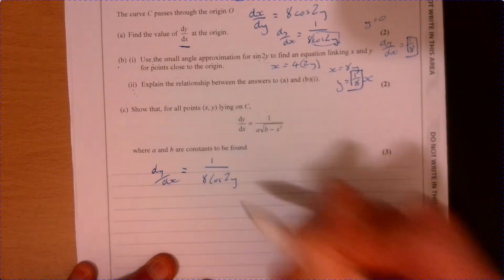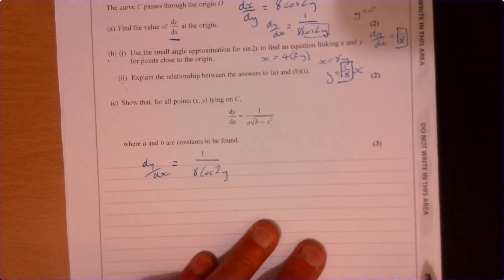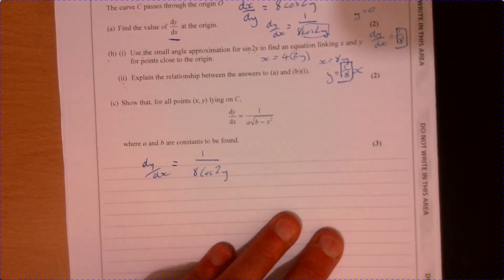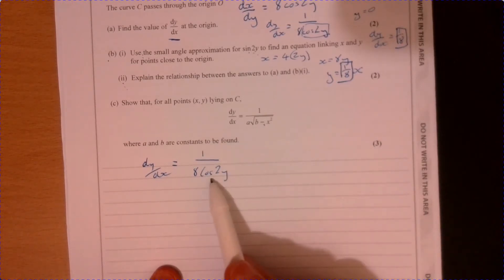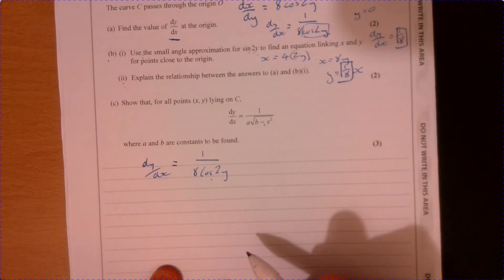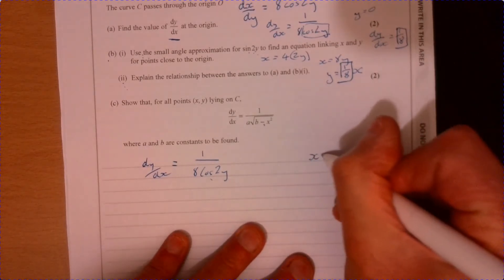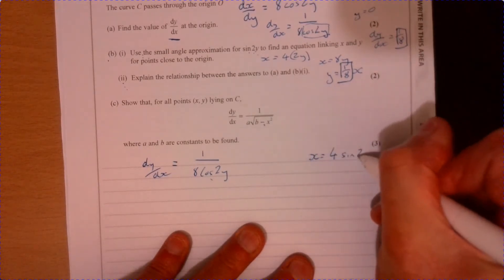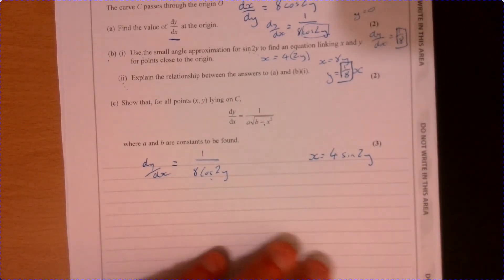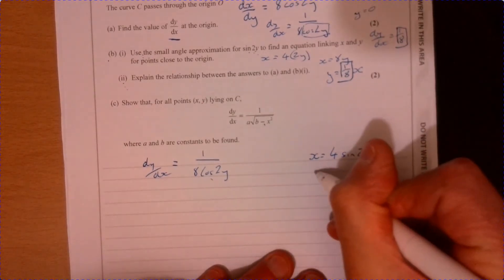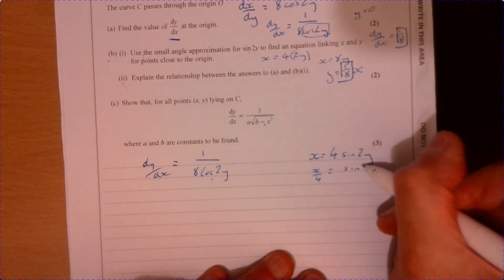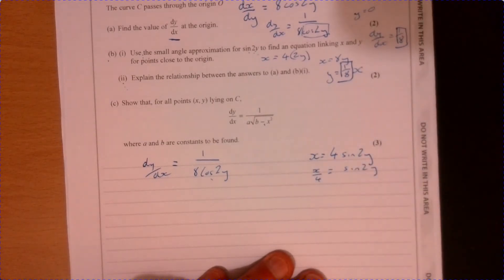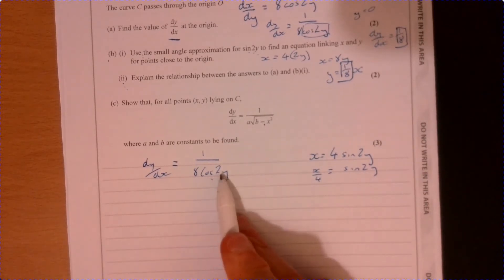It's not necessarily hard, but it's just knowing what to do on the question. So I was looking at this and I was thinking, we've got to get it looking like this over here. So let's start thinking, I know that x equals 4 sine 2y. I'm just trying to think of different ways of writing things down. So x over 4 equals sine 2y. That could be useful.